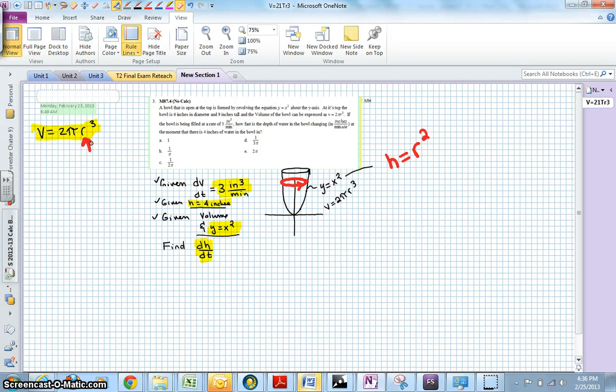So I need to put radius in terms of r. That's pretty easily done by taking the square root of both sides. The radius, or the x, is equal to the square root of the h, or the square root of the y.